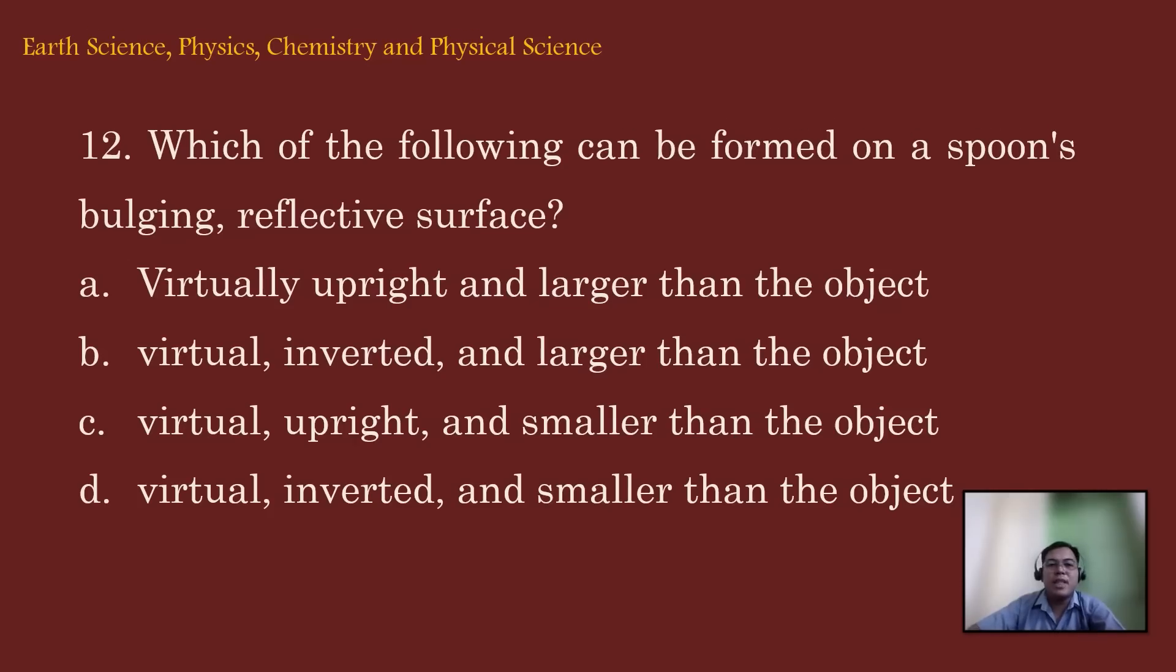Let's proceed to item number 12. Which of the following can be formed on a spoon's bulging and reflective surface? A. Virtually upright and larger than the object. B. Virtual inverted and larger than the object. C. Virtual upright and smaller than the object. And D. Virtual inverted and smaller than the object.